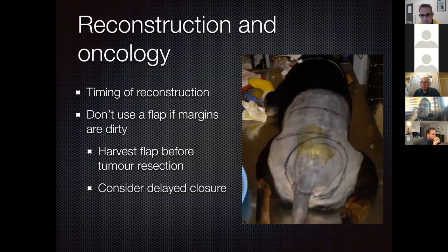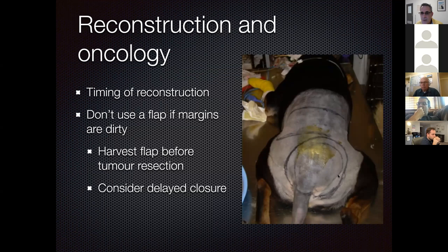Regarding timing of reconstruction: only do reconstruction once confident about clean margins. One technique is to harvest the flap before removing the tumor—harvest the flap, close the donor site, then cut out the tumor, keeping the donor site clean from cancer cell contamination. Consider delayed closure if unsure about margins.